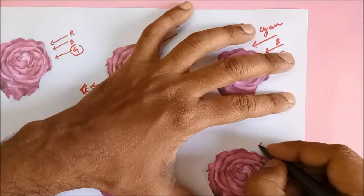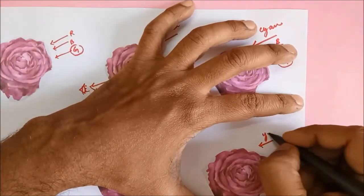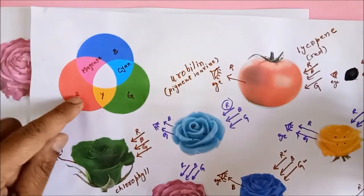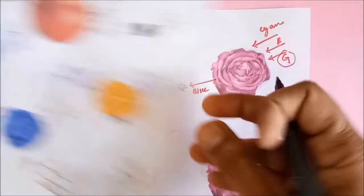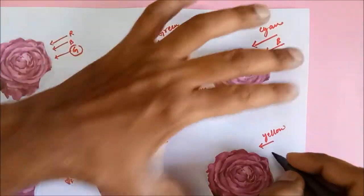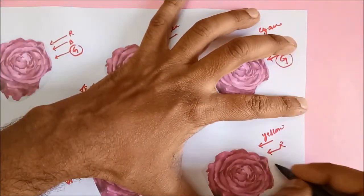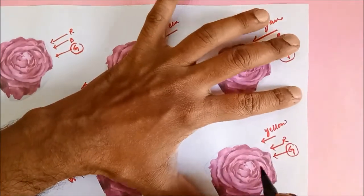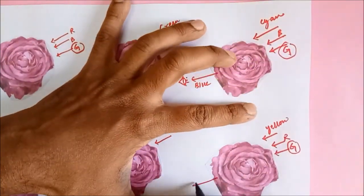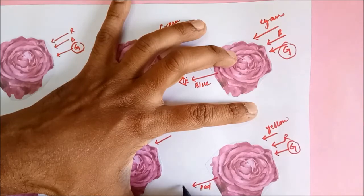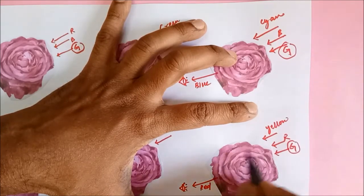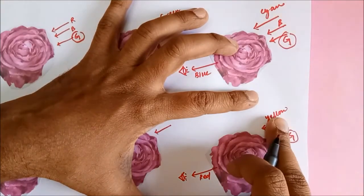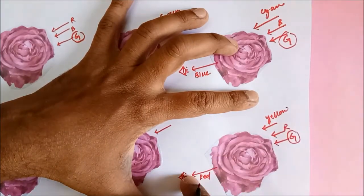Now let's impart yellow light on it. Yellow light is made up of red and green. Out of these, the green gets absorbed but red does not get absorbed, so the red reaches our eye. We see the color of this flower as red in yellow light.